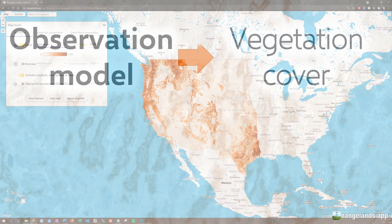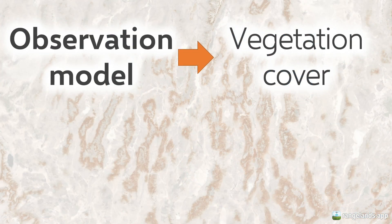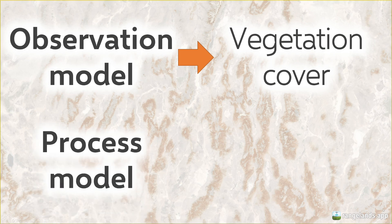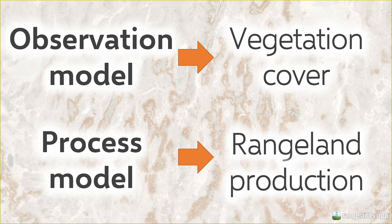In this case, we use an observation model. This is as opposed to a process-based model, which we use for the rangeland production dataset — which you can learn about in a separate short video linked up top.